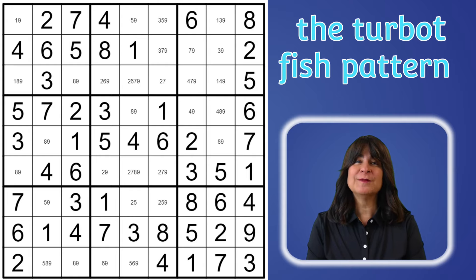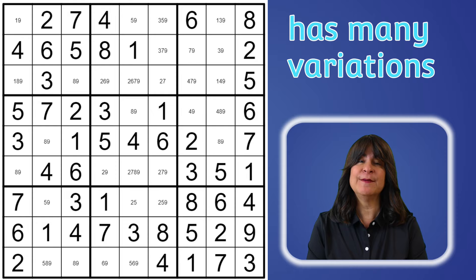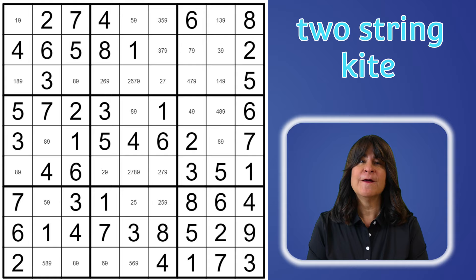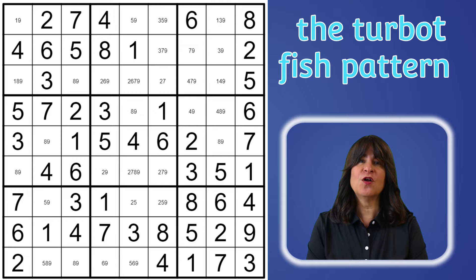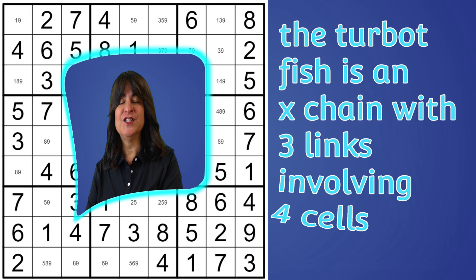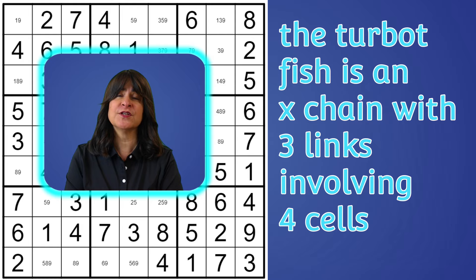Hello and welcome to this tutorial on the turbo fish pattern. The turbofish in Sudoku has a few patterns that have been named and easily recognized in their own right, such as the skyscraper, the two-string kite, and an empty rectangle. But these patterns all come under the umbrella of the broader category called the turbofish. A turbofish is really just a simple chain with three links between four cells for a single digit — let's call it X.